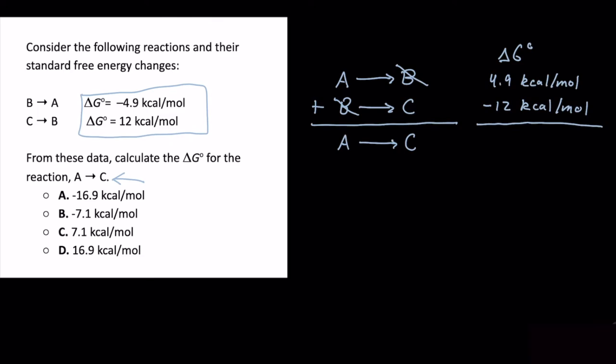Now just like we added up the chemical equations, we can add up these delta G naught or Gibbs free energy changes of our reaction. By simple arithmetic this will give us negative 7.1 kcal/mol, telling us that this is indeed a spontaneous reaction and we are releasing exactly 7.1 kcal/mol of energy when we run. Therefore our correct answer for this problem is B.